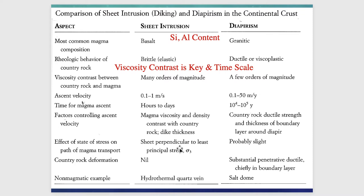Granitic provinces can develop especially along subduction zones, forming batholithic provinces that extend for thousands of kilometers — the result of multiple magma injections along a subduction trend. Country rock deformation in basaltic systems is minimal — exploiting pre-existing structural discontinuities. In contrast, granitic intrusions produce substantial penetrative ductile deformation, involving much larger mass movement. Non-magmatic examples include hydrothermal quartz veins filling fractures with quartz or carbonate cement.